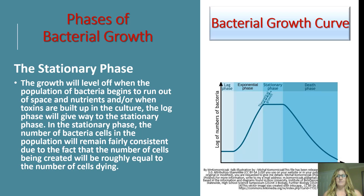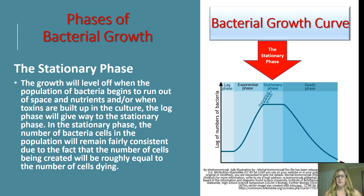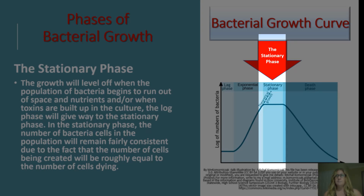The stationary phase is a time in which the exponential or log phase levels off. We begin to see evidence that space is running out, nutrients might be running out, and toxins can be building up in the culture. In the stationary phase, the bacteria cell number remains relatively constant — as many cells are dying as are being created, so the population stays fairly constant during this brief period.